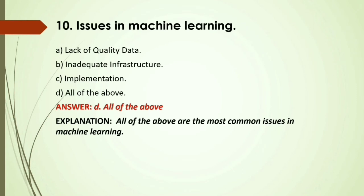MCQ: Issues in machine learning — A) Lack of quality data; B) Inadequate infrastructure; C) Implementation; D) All of the above. Answer: D, all of the above — all are the most common issues in machine learning.